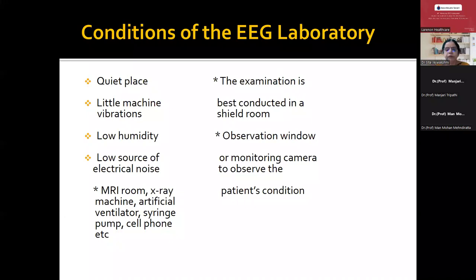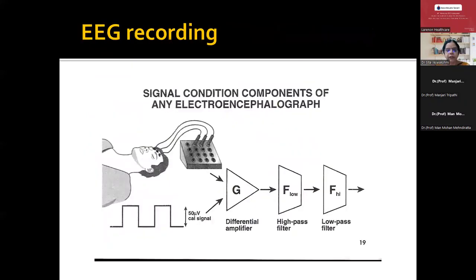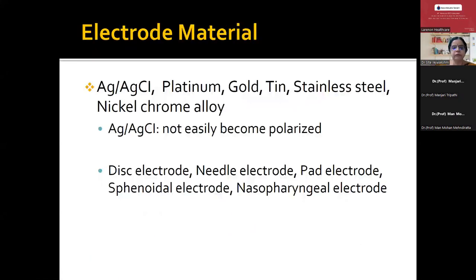The EEG lab should be away from large AC units in the hospital. It should not be close to any MRI or X-ray machine, and examination is best conducted in a shielded room if possible. There should be an observation window for the technologist. To summarize the EEG system: it goes to the junction box, and after that the machine amplifier contains a differential amplifier, after which the EEG signal goes through a low frequency filter and a high frequency filter.